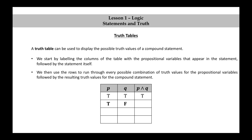If P is true and Q is false, then P∧Q is false. If P is false and Q is true, P∧Q is false. If P and Q are both false, P∧Q is also false.